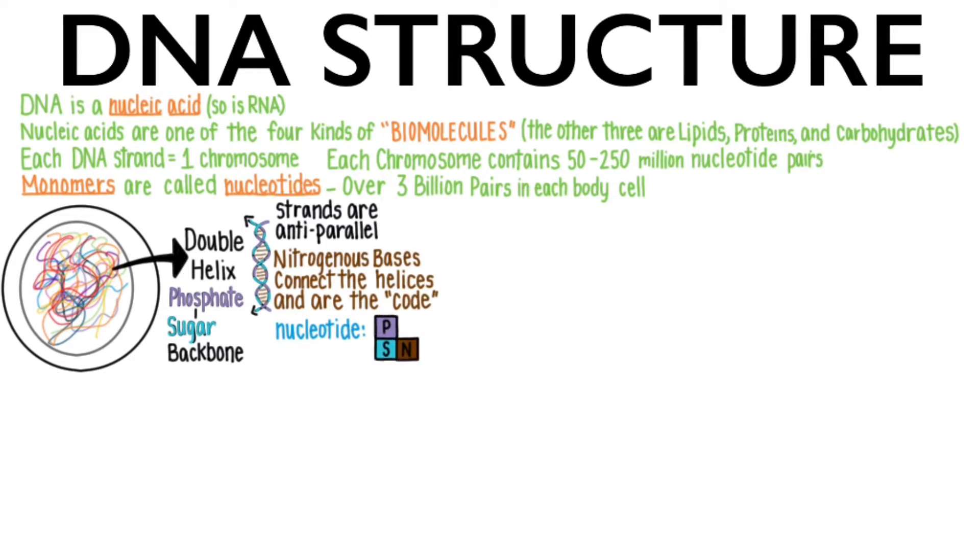Let's look more closely at how nitrogenous bases can form a code. There are only four different kinds, each with a different chemical structure so that they can only fit together according to their code. Nitrogenous bases attach to the sugar of the nucleotide, shown here in blue.